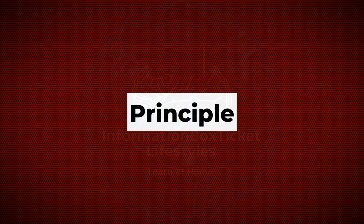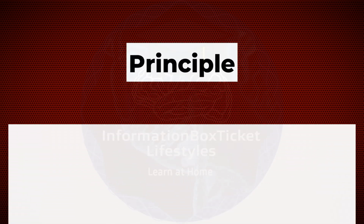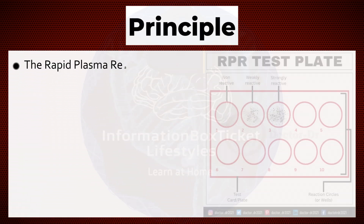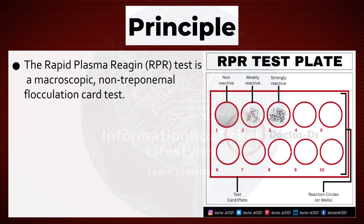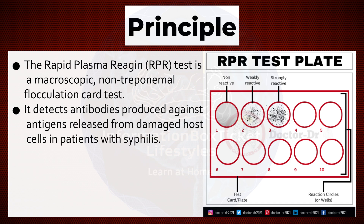Principle of Rapid Plasma Reagin Test. The Rapid Plasma Reagin Test is a macroscopic, non-treponemal flocculation card test. It detects antibodies produced against antigens released from damaged host cells in patients with syphilis.